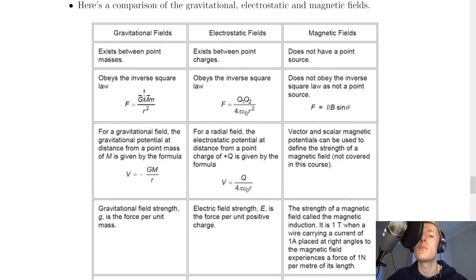Gravitational fields obey the inverse square law which is Newton's law of universal gravitation, F equals GMM over R squared. Electrostatic fields or electric fields obey the inverse square law of Coulomb's inverse square law which is F equals Q1 Q2 over 4 pi epsilon not R squared. And lastly magnetic fields do not obey the inverse square law as they do not have a point source.